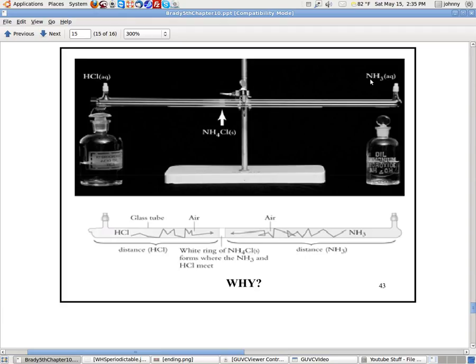The reason why it's formed closer to the HCl than it is to NH3 is because the NH3 is lighter. Nitrogen is basically 14 grams per mole, and hydrogen is 1 per mole. And there's three hydrogens. So 3 plus 14 is 17. Whereas chlorine is like 35 and hydrogen is 1, so that's 36. So since this is the lighter one, it travels faster.